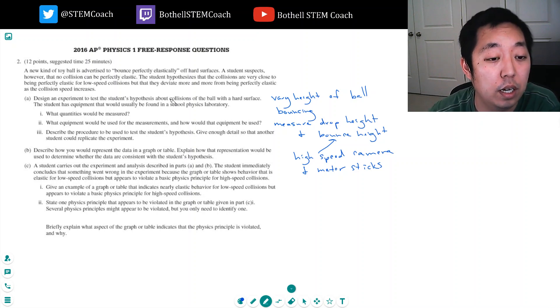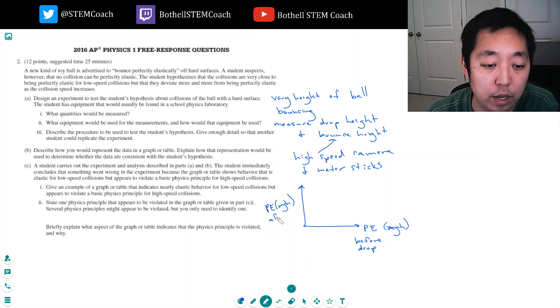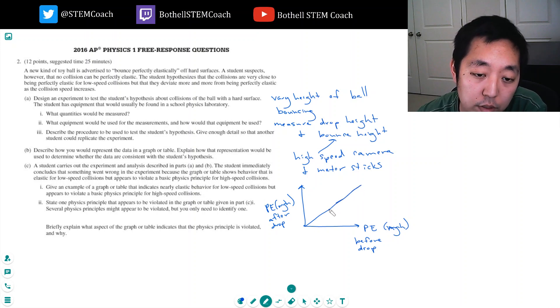I would measure on one axis the potential energy which is mgh of the initial, of before collision, before drop, like where I dropped it from, and then the potential energy mgh after the drop. And if it's perfectly elastic it should be equal, so I would compare it to y equals x.